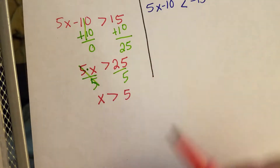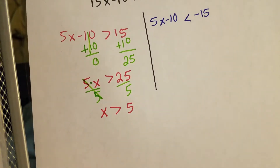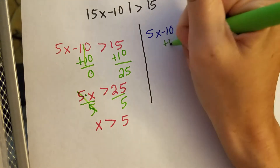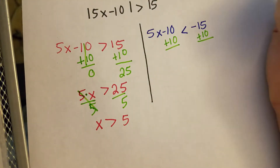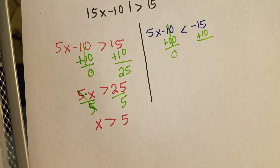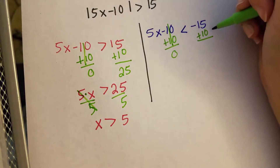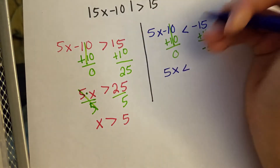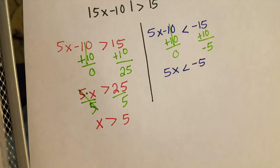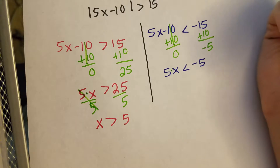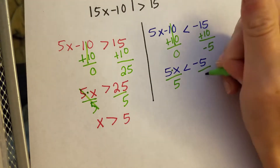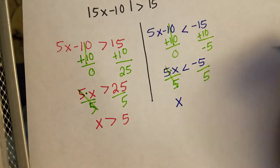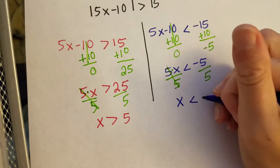Now we move to the right side and do the same thing. We get negative 10 to the other side by adding positive 10 to both sides — on the left it cancels, and on the right, negative 15 plus 10 gives me negative 5. So we have 5x is less than negative 5. Since 5 is multiplying X, we divide both sides by 5. Five divided by 5 cancels, leaving X is less than negative 5 divided by 5, which is negative 1.